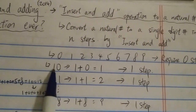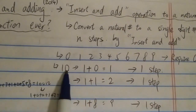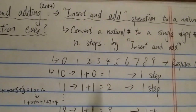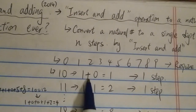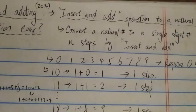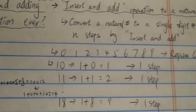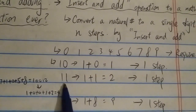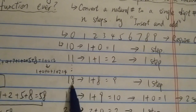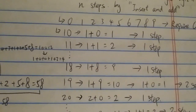The number 10 requires 1 step because 10 is not a single digit number. You convert it by inserting an add sign between 1 and 0, then it becomes 1 plus 0, which is 1, and 1 is a single digit number. Therefore you can turn 10 into a single digit number in 1 step. Similarly, 11 requires 1 step because 1 plus 1 is 2. And all the way to 18 — 18 still requires just one step because 1 plus 8 equals 9, which is a single digit number.